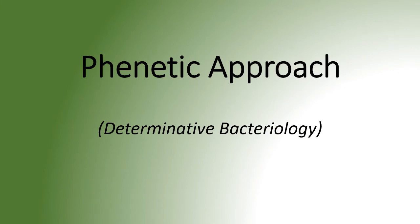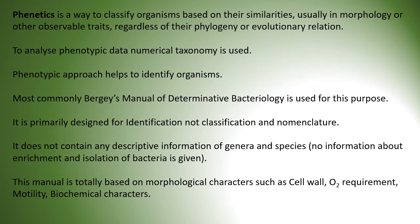First we will discuss the phenetic approach. Here, remember determinative bacteriology — for example, the Bergey's manual used for identification of microbes. Phenetics is a way to classify organisms based on their similarities, usually in morphology or other observable traits, regardless of their phylogeny or evolutionary relationship. Depending on colony morphology or biochemical tests performed, those are the observable traits. To analyze phenotypic data, numerical taxonomy is used.